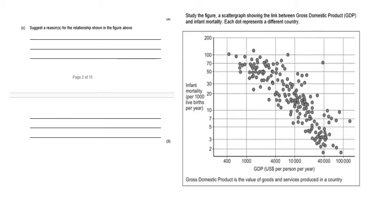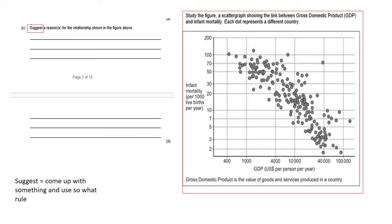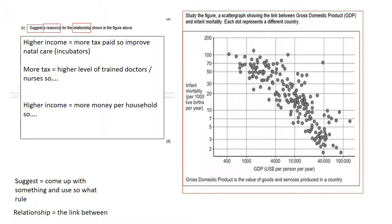So question C, we're obviously going to need the figure again for this. Suggest is one of the more tricky command words. Suggest means you've got to come up with something. And in this case, you're going to need the so what rule as well, because it's not just a one mark question. We can see three marks there, so you're going to have to extend your points. A reason or reasons. My advice for this would be it is feasible to get all the marks here in just explaining one reason. But if it ever says reasons with the bracket on the S, I would certainly advise doing two. Relationship means the link between and obviously shown in the figure above. So then we're going to have to extend our point here. We're going to have to come up with something to prove that as people earn more money, less infants die.